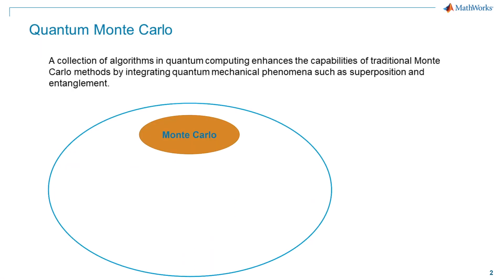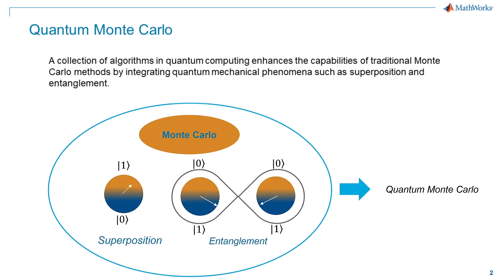Quantum Monte Carlo, a suite of algorithms within quantum computing, extends the capabilities of classical Monte Carlo methods by incorporating quantum mechanical effects like superposition and entanglement. For an overview on quantum computing visit the introduction to quantum computing page linked below. Research shows that quantum Monte Carlo offers a quadratic speedup compared to classical Monte Carlo methods, making it a powerful computational technique with potential to speed up simulations.